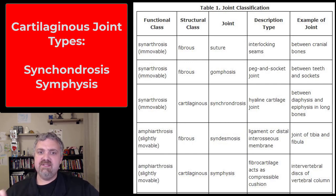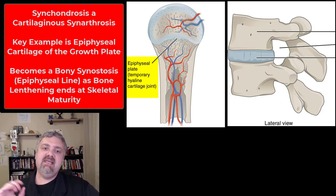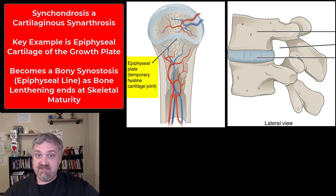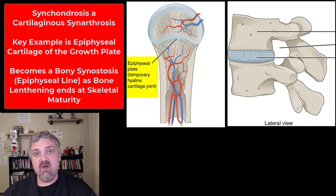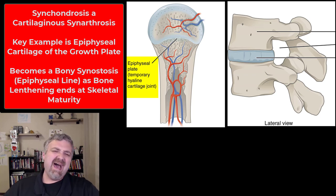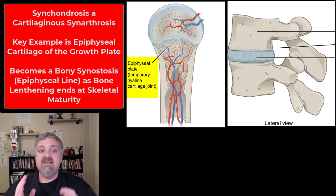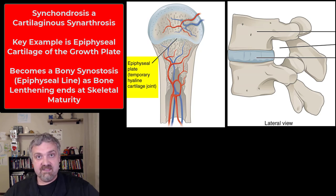Next we have the cartilaginous joints. We have the synchondrosis — chondro meaning cartilage — and the symphysis. The synchondrosis is a cartilaginous synarthrosis; this joint should not move. The example here is the epiphyseal plate, or growth plate — the cartilage plate between the shaft of a long bone and the ends while bones are still maturing. Once you reach skeletal maturity, it's replaced by a bony synostosis, where the bones actually fuse together. As the epiphyseal plate is replaced with an epiphyseal line and bone lengthening ends, the synchondrosis is gone and the synostosis takes its place.